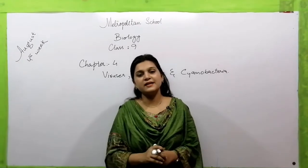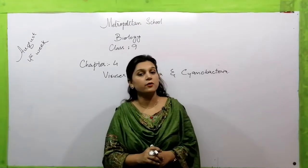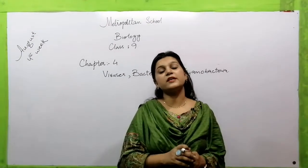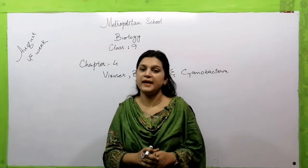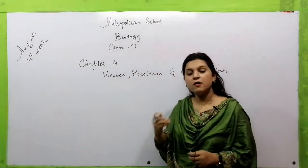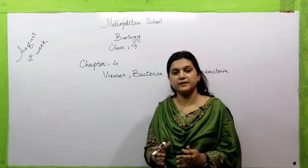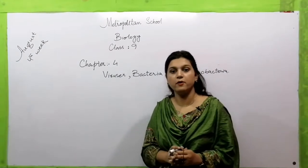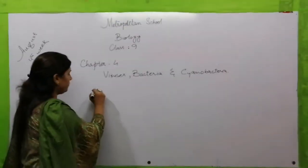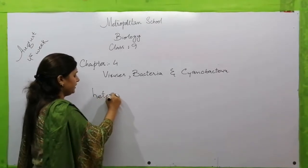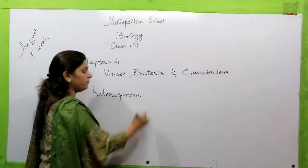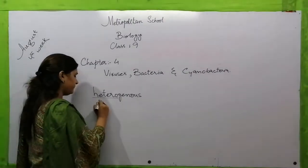Microbiology is a branch of science that deals with the study of microorganisms. How can you define microorganisms? The organisms which cannot be seen with our naked eyes — all these small, tiny organisms which we cannot see with the naked eye — they are called microorganisms. Microorganism is a heterogeneous group of organisms. 'Hetero' means different.